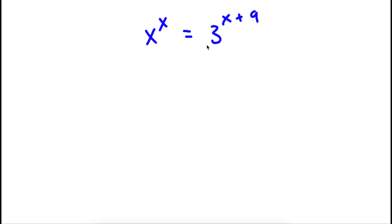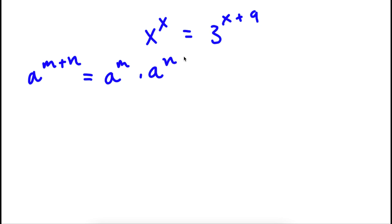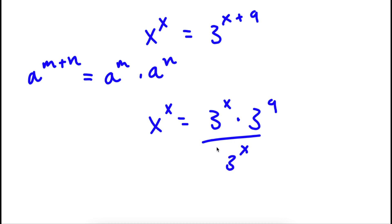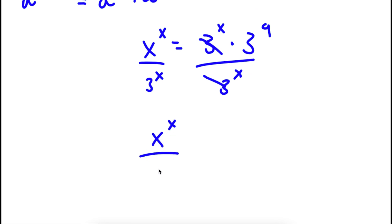Alright, so I have x to the power of x is equal to 3 to the power of x plus 9. Now, if I have something in the form a to the power of m plus n, this is the same thing as a to the power of m times a to the power of n. So I can rewrite 3 to the power of x plus 9 as 3 to the power of x times 3 to the power of 9. Now I'm going to divide both sides by 3 to the power of x. These cancel out, leaving x to the power of x over 3 to the power of x is equal to 3 to the power of 9.